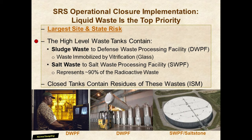Sludge waste goes to the Defense Waste Processing Facility, or DWPF, where a vitrification process encapsulates the radionuclides in glass, which is poured into stainless steel canisters shown being held up by a forklift. The photo to the left shows a DWPF operator along with the vitrification process seen through the glass behind him. Salt waste — which accounts for about 90% of the waste — goes to the Salt Waste Processing Facility, or SWPF, where it is mixed with grout and stored in the massive saltstone facility. Closed tanks contain residues of these wastes, and ISM characterizes the radionuclide concentrations before tank closure.